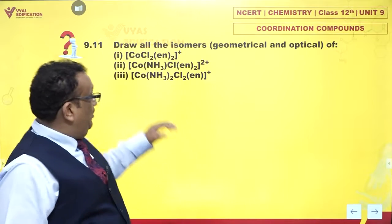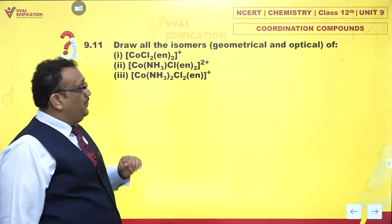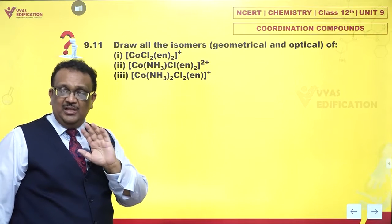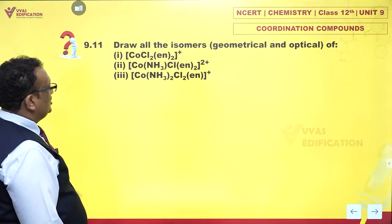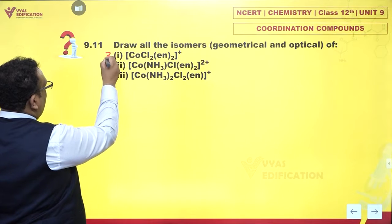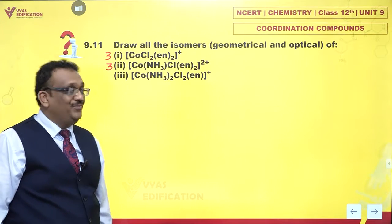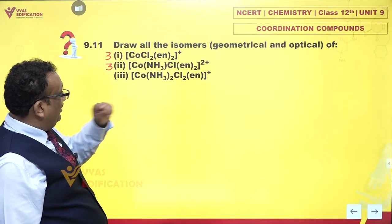If Cl and ammonia are cis to each other, I would get a different geometrical isomer. Just like part one, I would get part two. All we need to do is in part one, just erase one Cl and write down one ammonia. There is nothing new, it is just a repetition. I got three isomers here, I will again get three here.